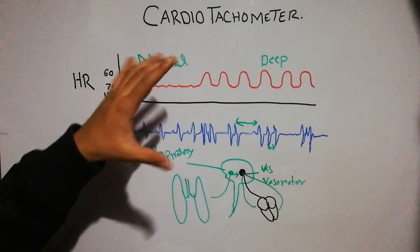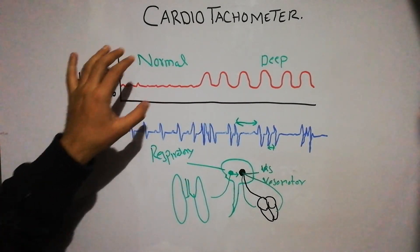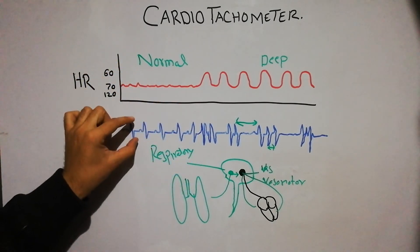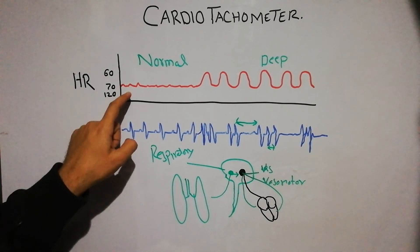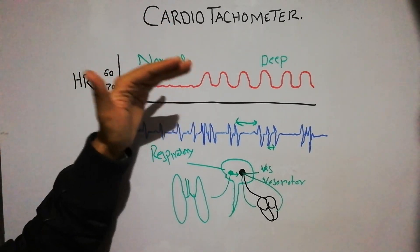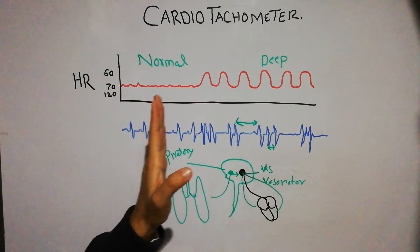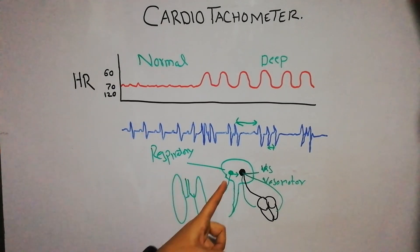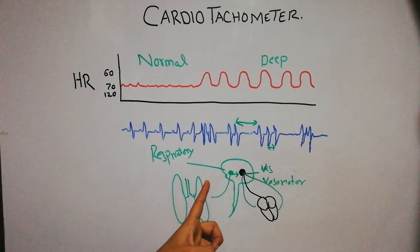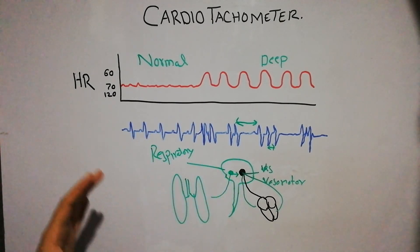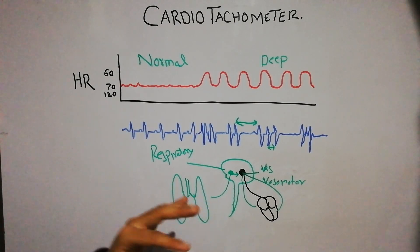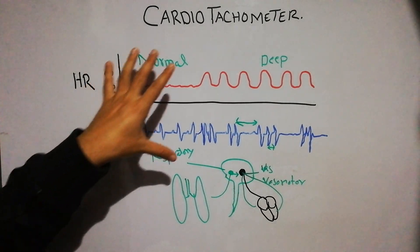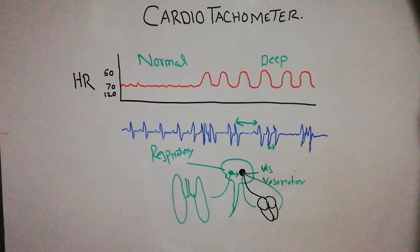In summary, normally the variation in the distance between two QRS complexes is negligible, but when a person is breathing deeply, the variation increases and decreases by about 30%. This is because during deep breathing there is spillover of impulses from the respiratory center to the vasomotor center, causing alternating increases and decreases in sympathetic and parasympathetic activity, which in turn increase and decrease the heart rate during the respiratory cycle. That's all about the cardio tachometer and the effect of deep breathing on the heart rate.